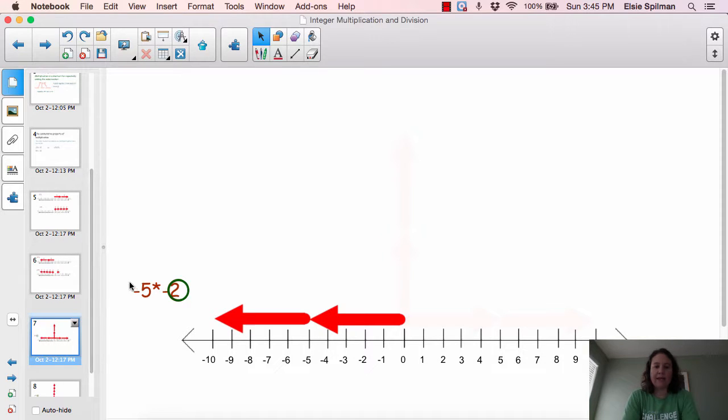What happens if I take negative 5 times negative 2? Well, here's what happened when I multiplied 5 times 2.